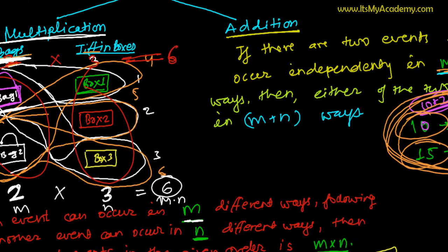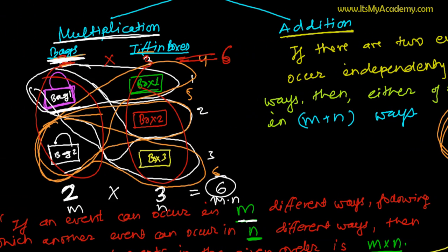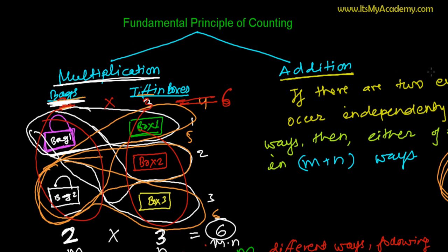I hope you understand it, and this is really going to help us a lot while learning permutation and combination. So let's go to some examples, and after that we'll be talking about the factorial. And then we'll start the real permutation and then combination.